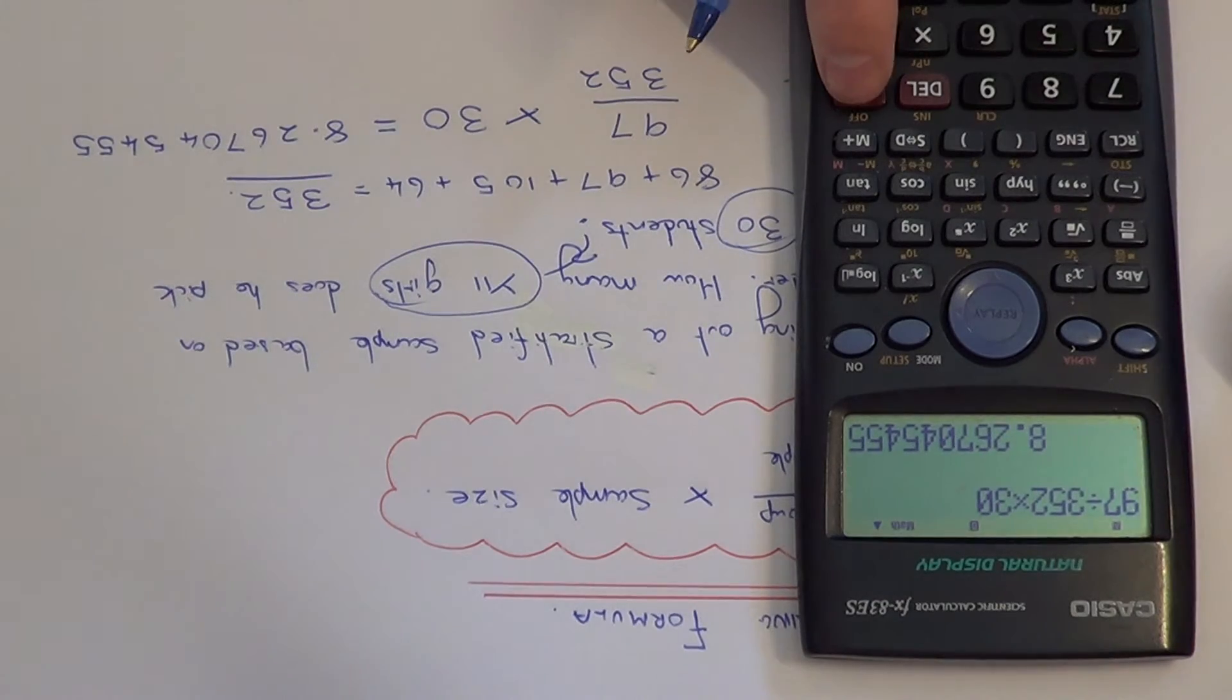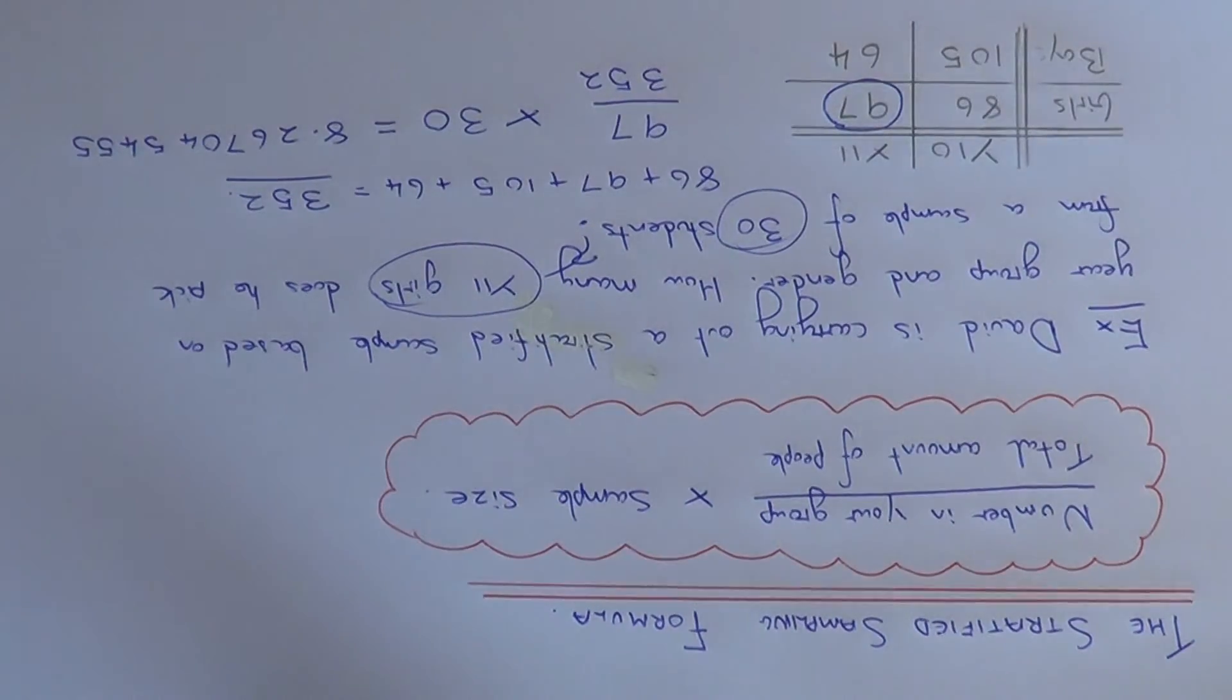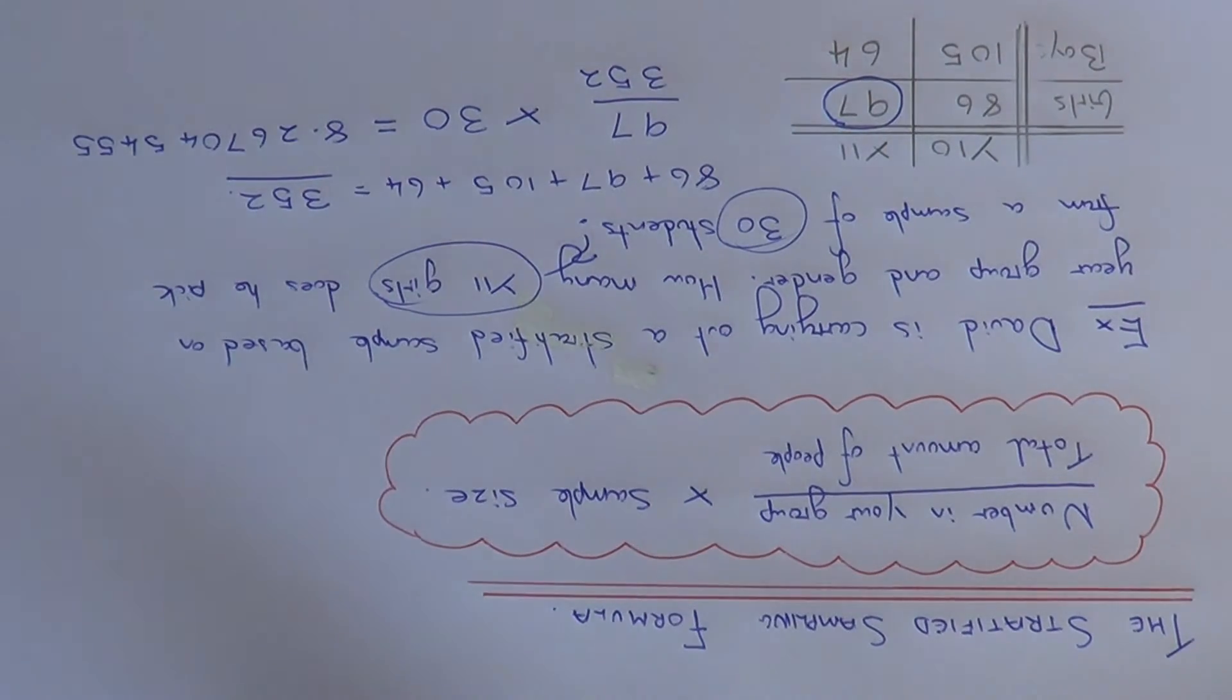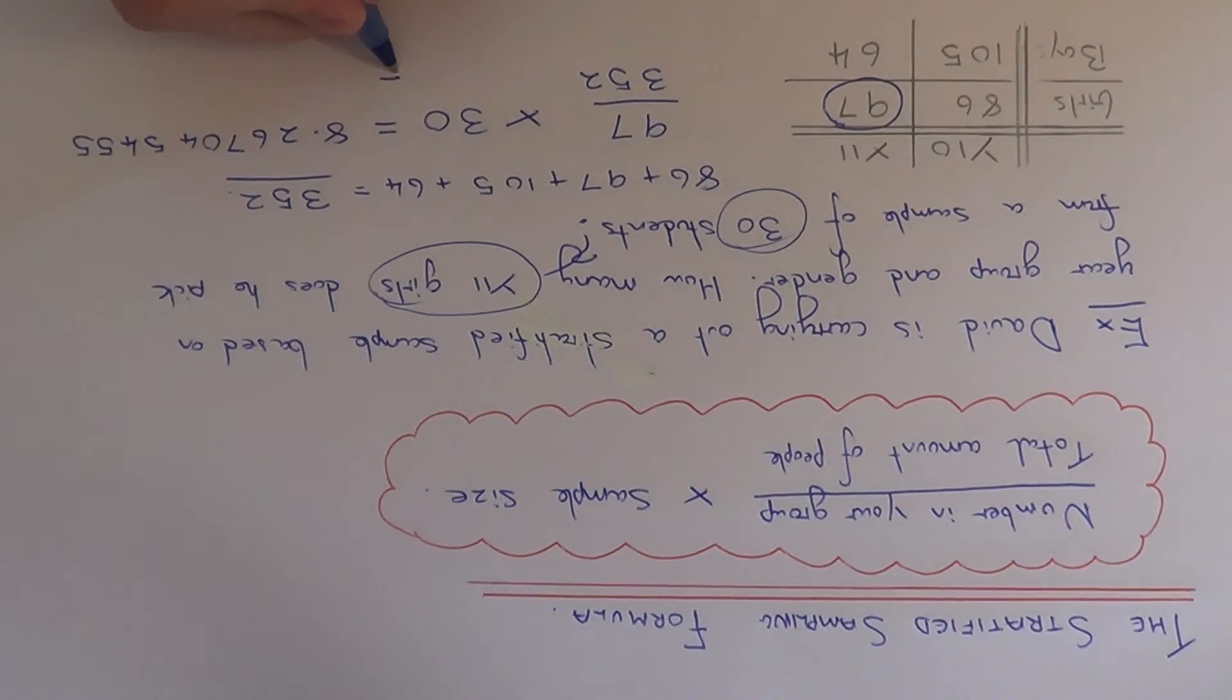Now there is one last thing which we need to do which is very important. We need to know how many people we pick from the sample, so we can't leave this answer as a decimal. We need to round this answer off to the nearest whole number.